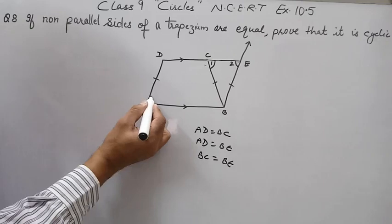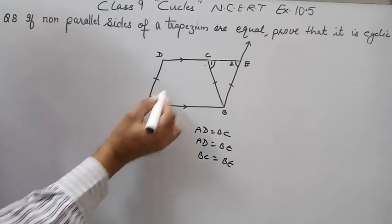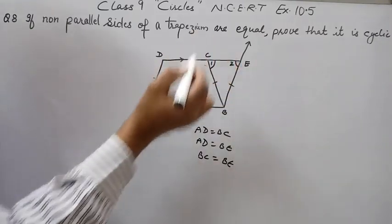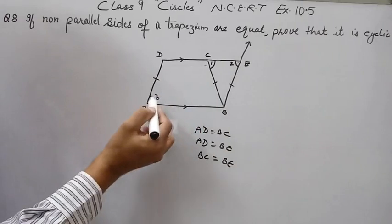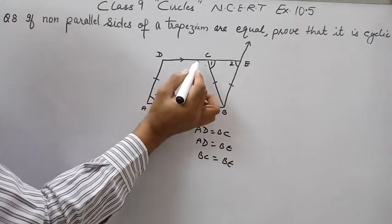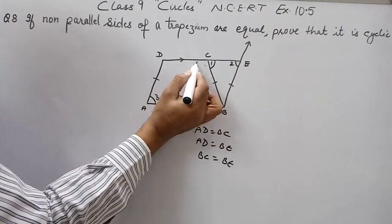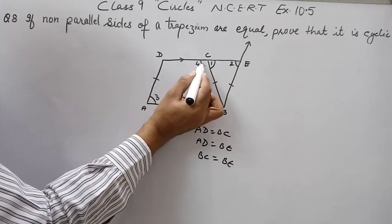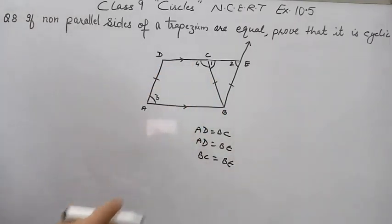Now this angle is angle 3. Angle 3 equals angle 2 because opposite angles of a parallelogram are equal. And here we can write angle 4.